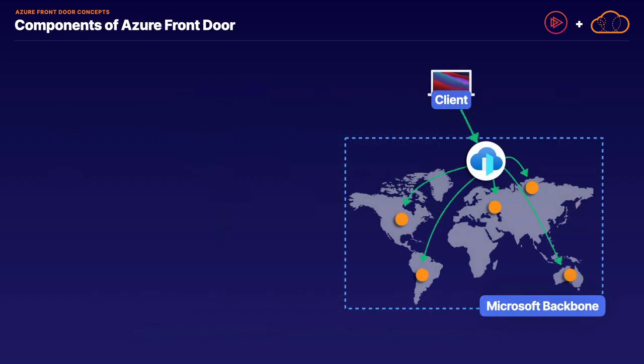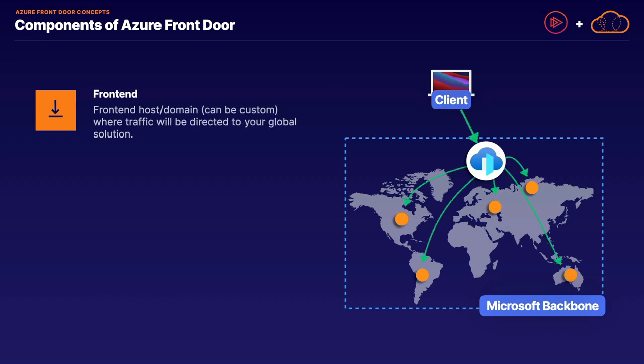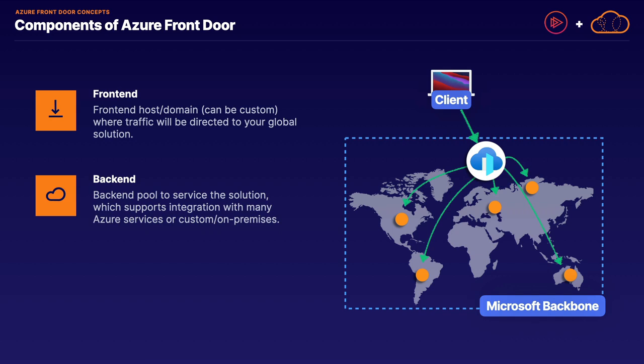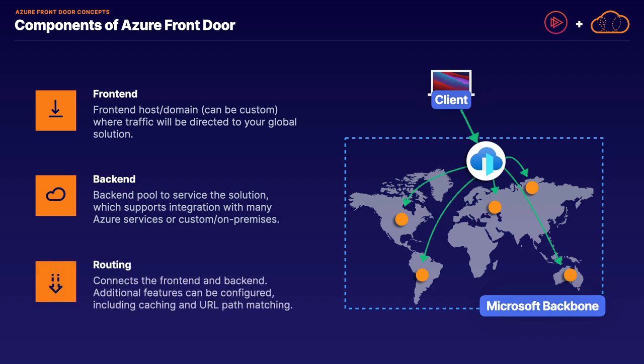The components of Azure Front Door come down to just a few. We have our front end — the front end host or domain, which can be a custom domain name where traffic is directed for our global solution. Then we have a back end pool of services, which is the solution that services requests coming in over that domain. It's important to understand this can be Azure services or customer on-premises services. What connects the front end and back end is routing, which routes traffic from the front end host to the appropriate back end resources.